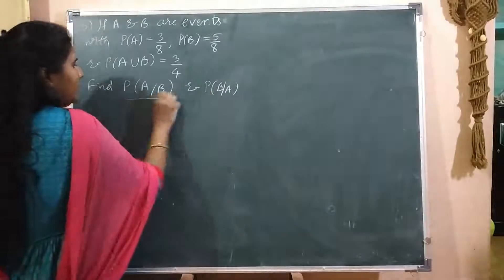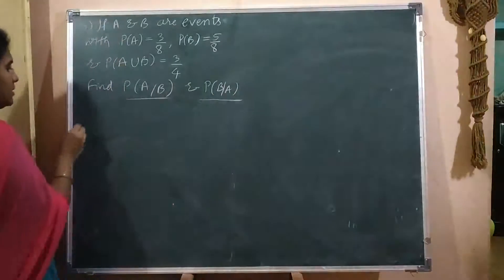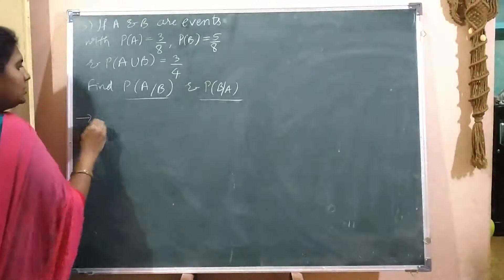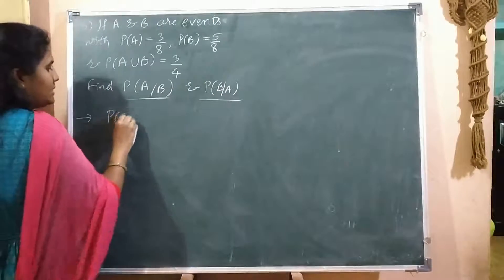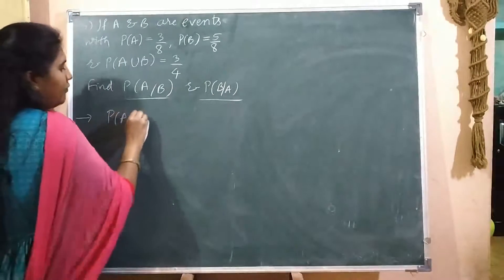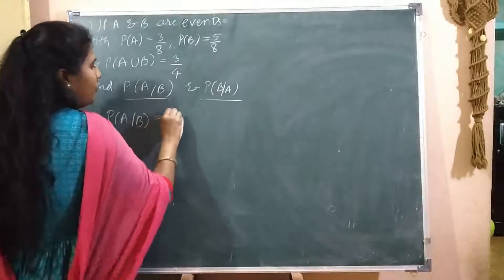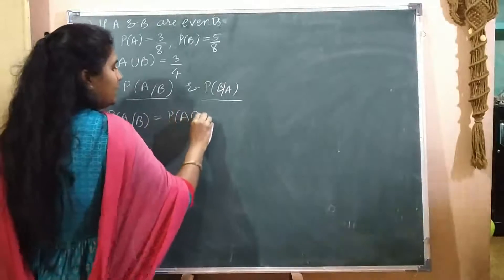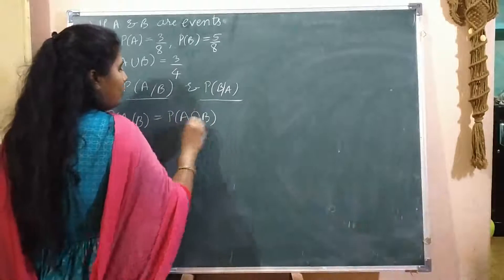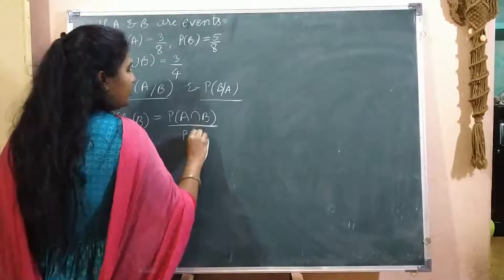These are nothing but conditional probabilities. We know that conditional probability P of A given B equals P of A intersection B divided by P of B.